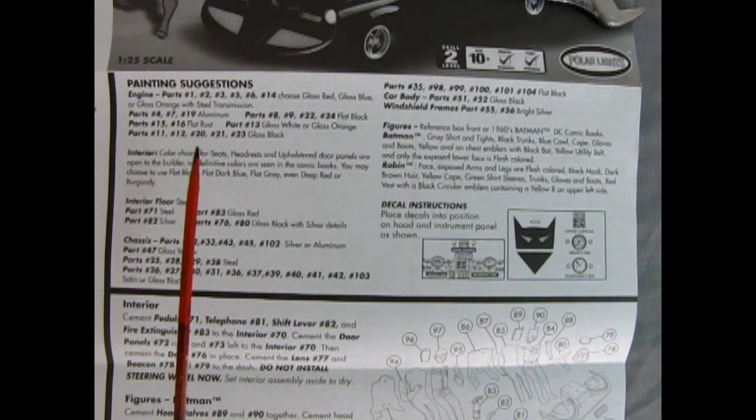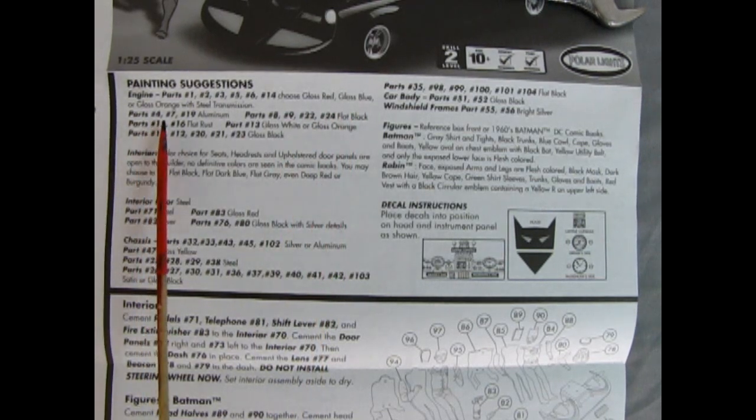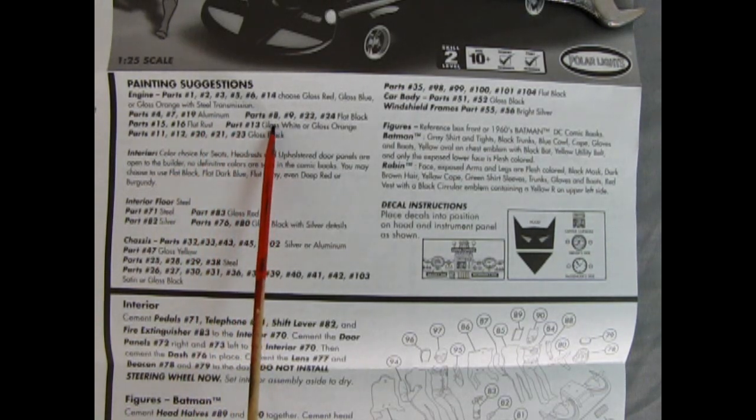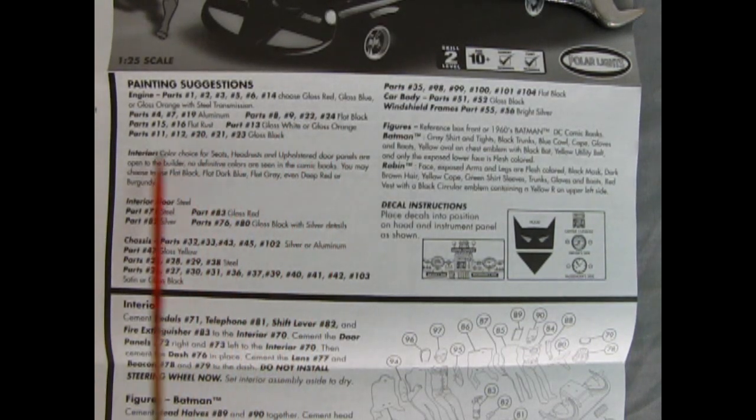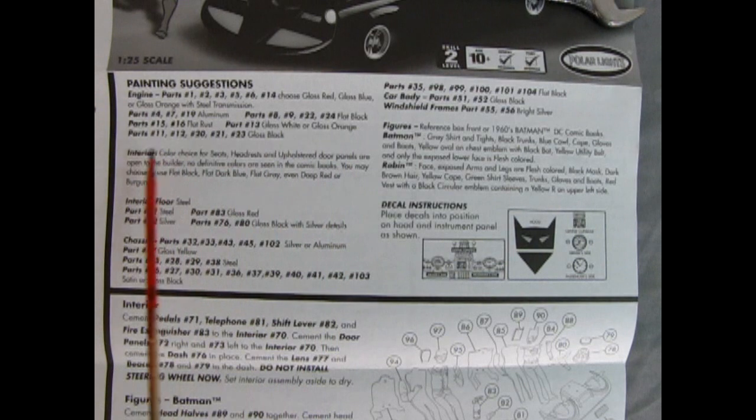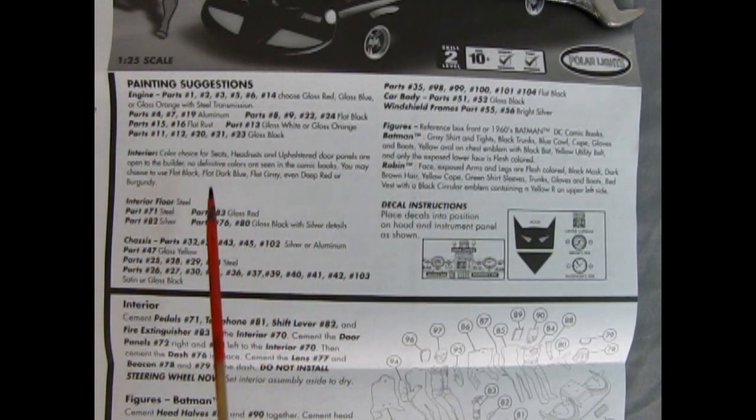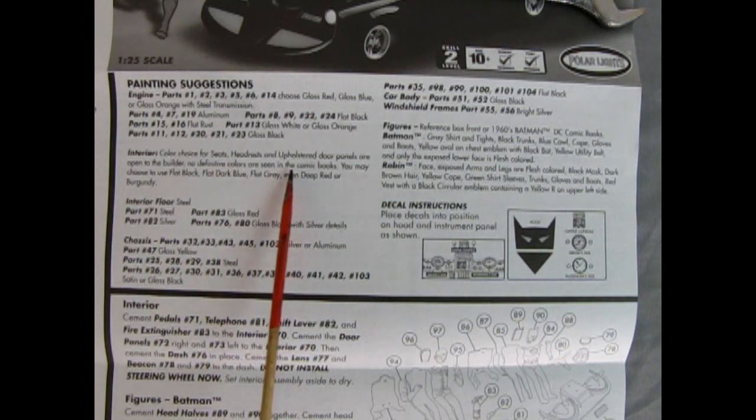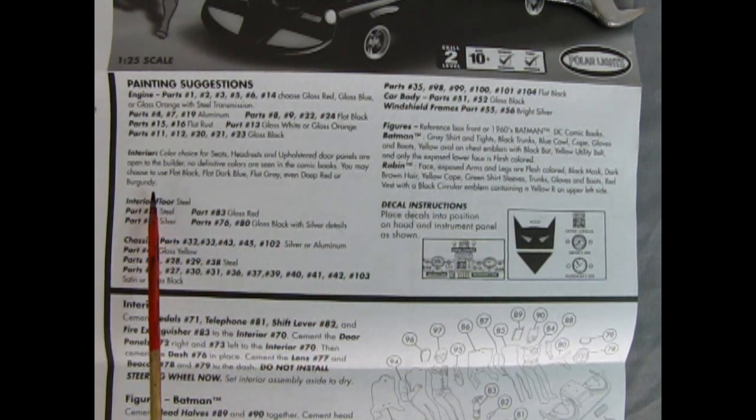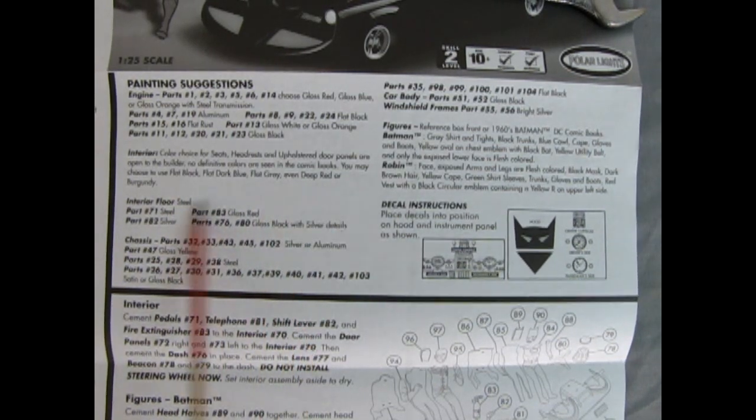Right off the bat, we have our painting suggestions here. For the engine, choose gloss red, gloss blue, or gloss orange with the steel transmission. Parts 4, 7, and 14 are aluminum. Parts 8, 9, 22, 24 flat black. Parts 15 and 16 are flat rust. Parts 17 gloss white or gloss orange. Parts 11, 12, 20, 21, 23 is gloss black. The interior color choice for seats, headrests, and upholstered door panels are open to the builder. No definitive colors are seen in the comic books. You may choose to use flat black, flat dark blue, flat gray, even deep red or burgundy.